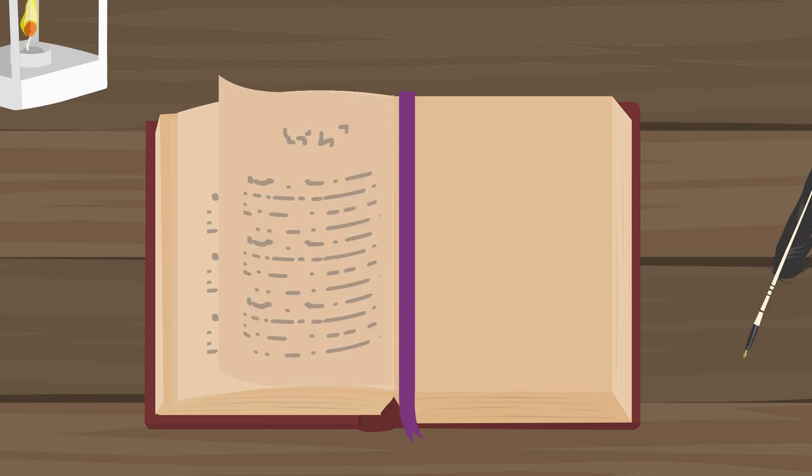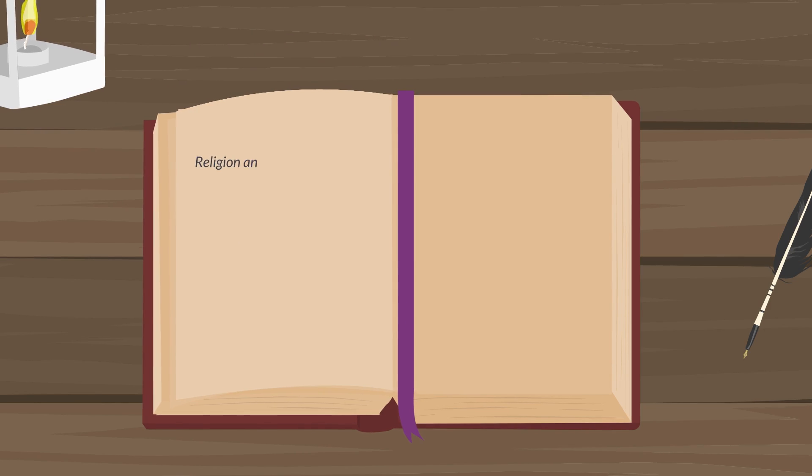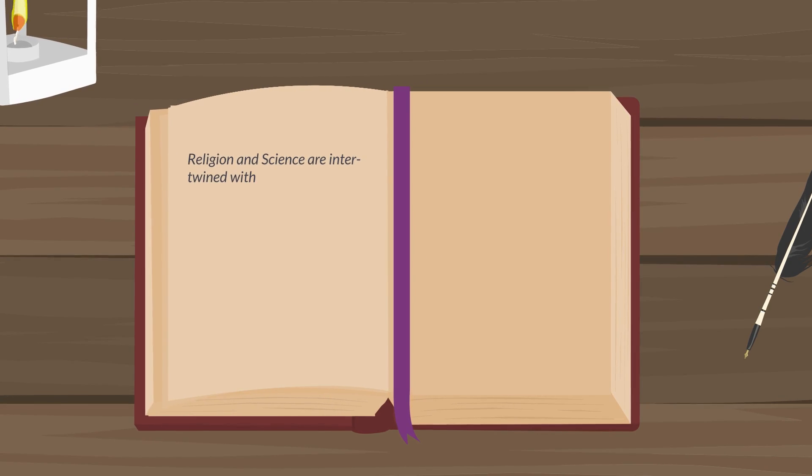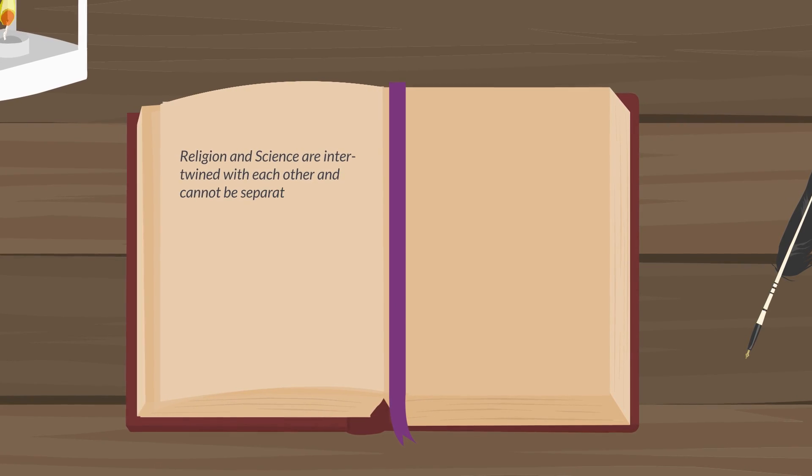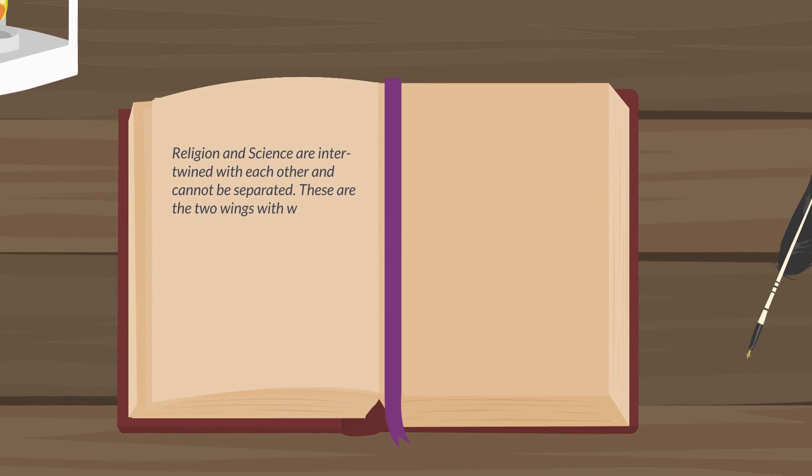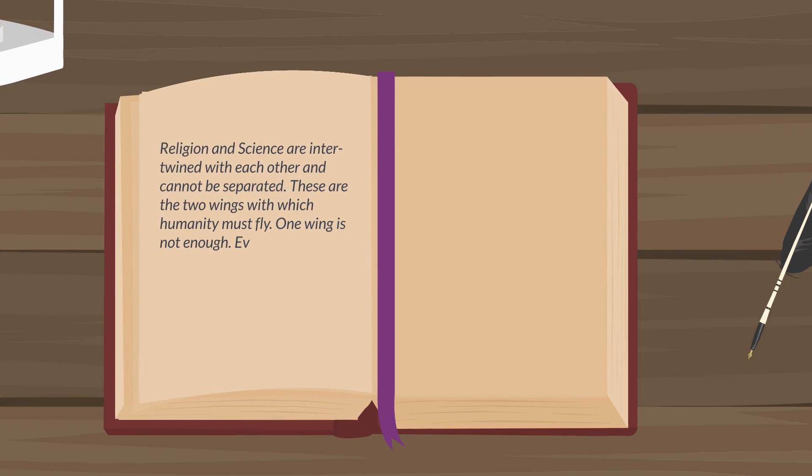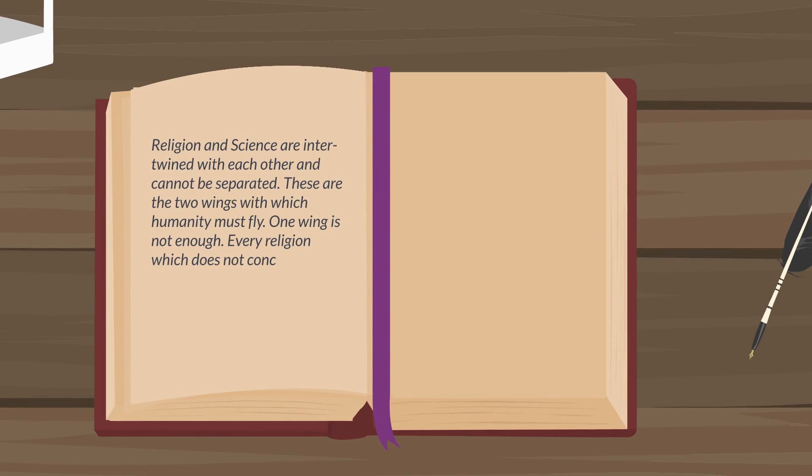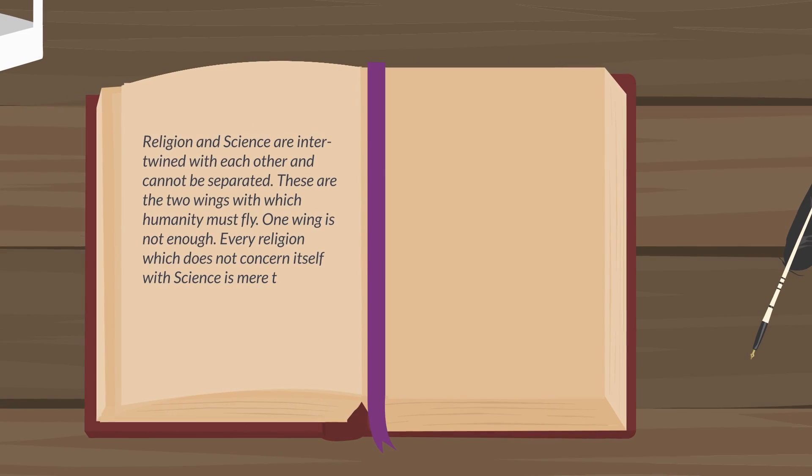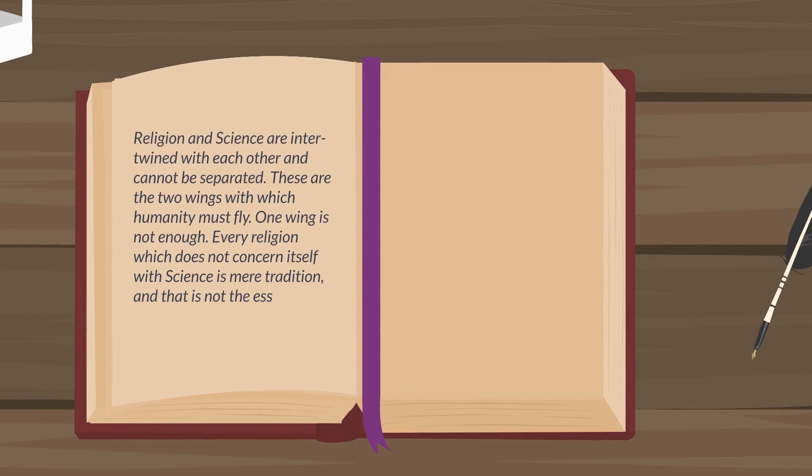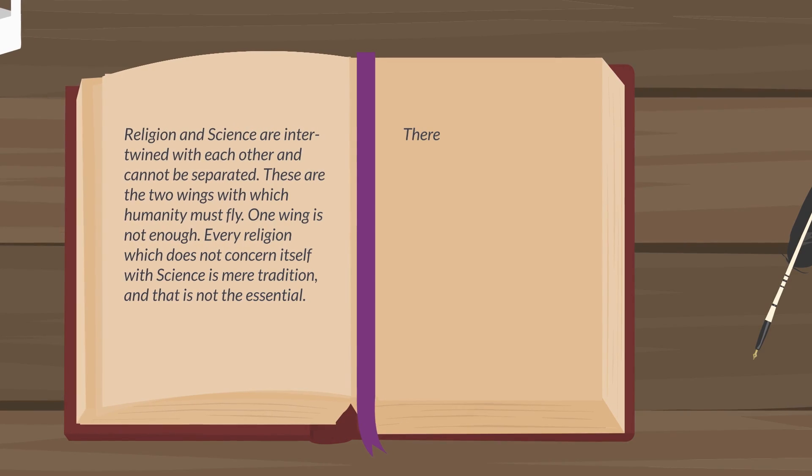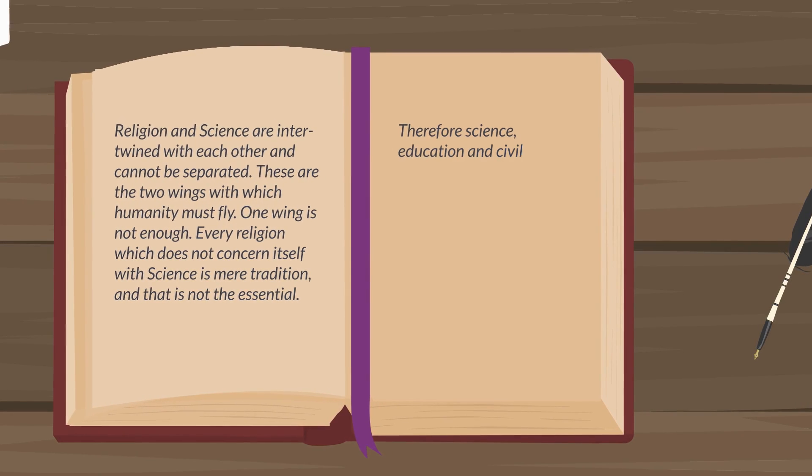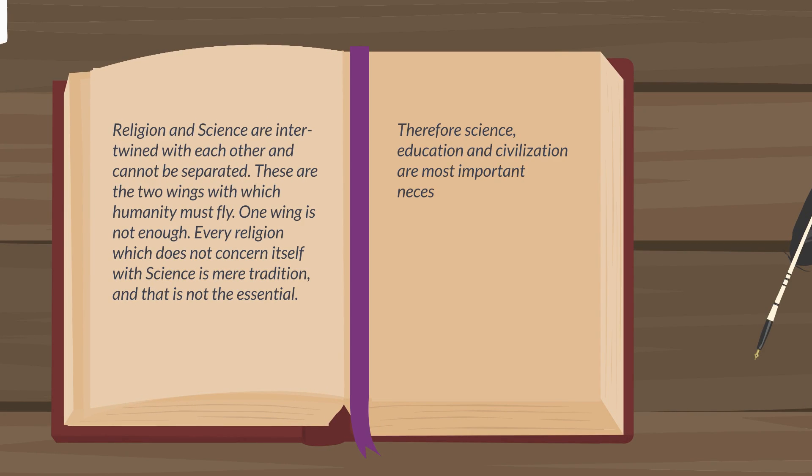In the Baha'i Writings we read, Religion and science are intertwined with each other and cannot be separated. These are the two wings with which humanity must fly. One wing is not enough. Every religion which does not concern itself with science is mere tradition, and that is not the essential. Therefore, science, education, and civilization are most important necessities for the full religious life.